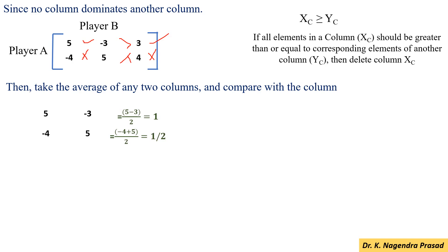Then, the average of these values: (5 minus 3) divided by 2 is 1, and (minus 4 plus 5) divided by 2 is 1/2. These elements are compared with the 3rd column.